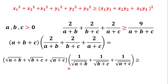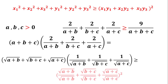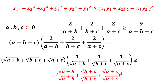By applying the Cauchy-Schwarz inequality, the product of these two parentheses is greater than or equal to: x₁y₁, which is √(a+b) times 1/√(a+b), plus x₂y₂, which is √(b+c) times 1/√(b+c), plus x₃y₃, which is √(a+c) times 1/√(a+c), all squared. Each of these three products equals 1, so we get 3 squared, which equals 9.